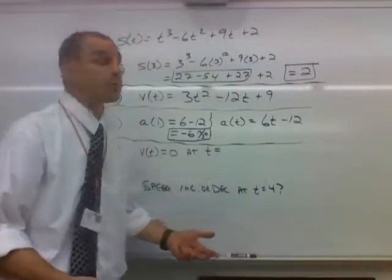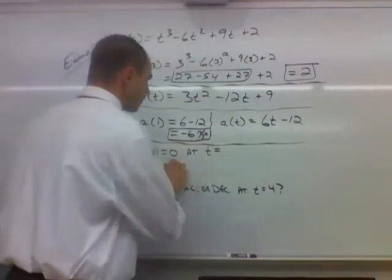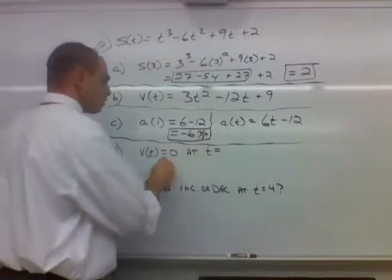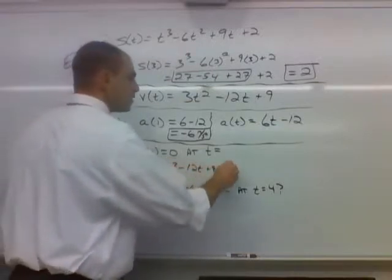So this is an algebra problem. Because we have our velocity right here, 3t squared minus 12t plus 9. We're interested in figuring out when that's equal to 0. So 3t squared minus 12t plus 9 is equal to 0. We have to solve this.